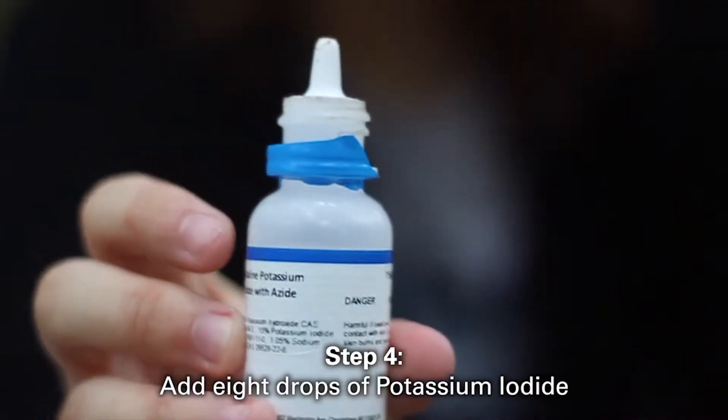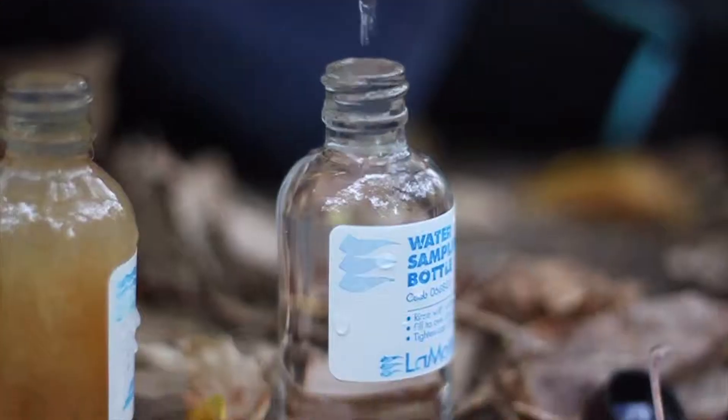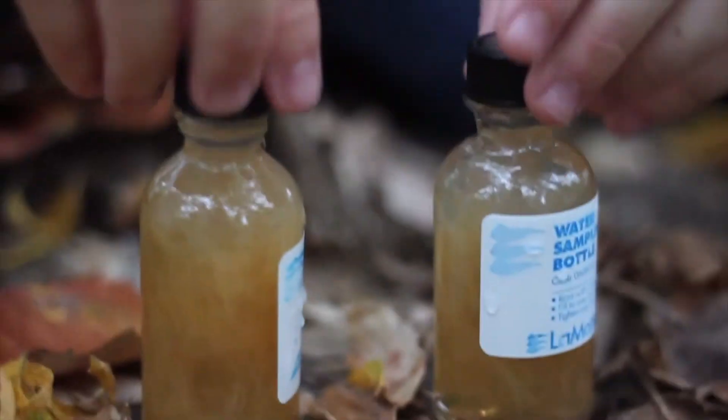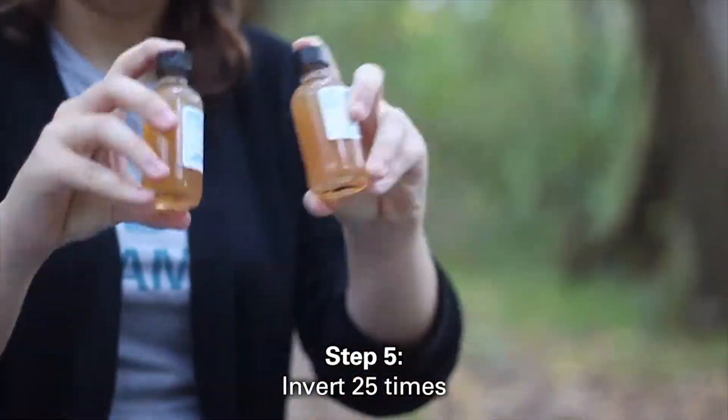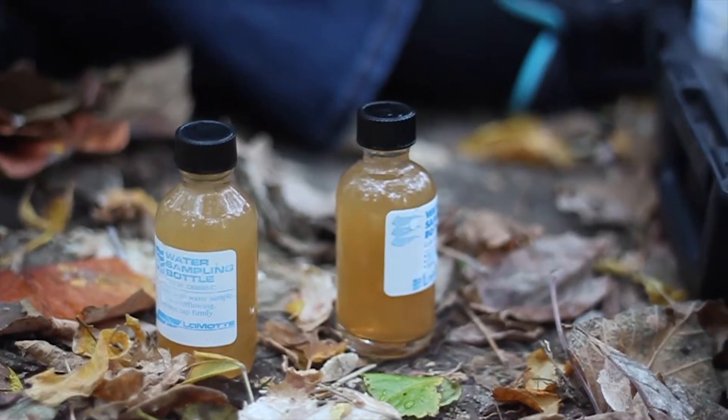we will add 8 drops of the blue or clear bottle in our kit, potassium iodide. After adding both chemicals, we will cap both of our bottles and invert them 25 times. This allows the chemicals to mix properly with the sample water.